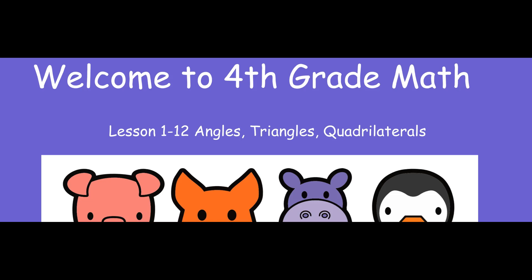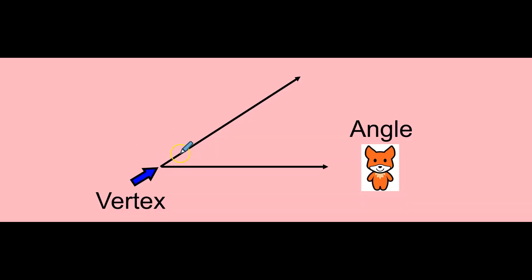This is lesson 112: Angles, Triangles, and Quadrilaterals. These two rays meet at a point called a vertex. This makes up an angle.